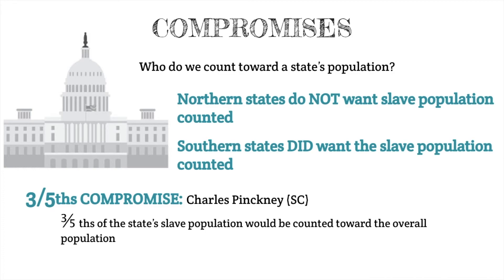Now that the issue of representation was settled, the next question became: who do we count towards a state's population? There was a significant slave population in the United States, and the question was whether to count them or not. Northern states did not want the slave population counted because that would increase the voting power of southern states. Southern states wanted to count the slave population because that would increase their voting power in the new government. The debate continued until Charles Pinckney from South Carolina proposed the three-fifths compromise — three-fifths of the entire state's slave population would be counted and added to the state's overall population, thereby determining how many representatives they would have in Congress.